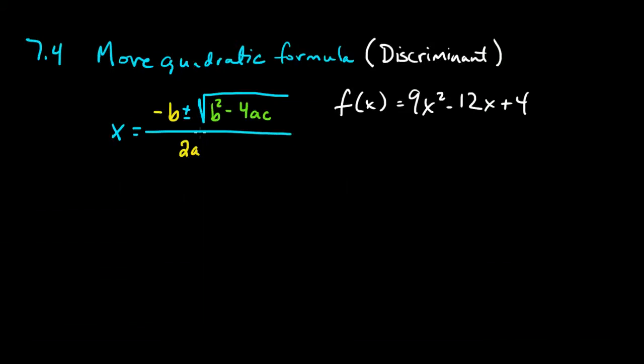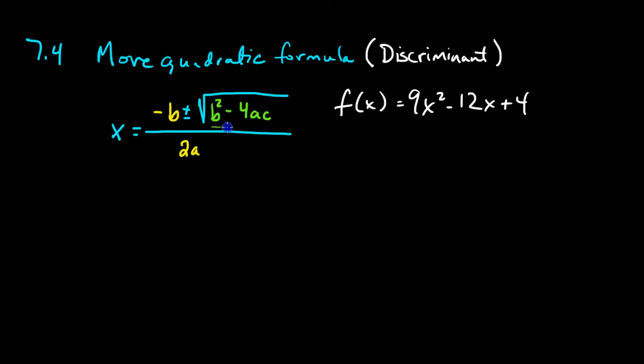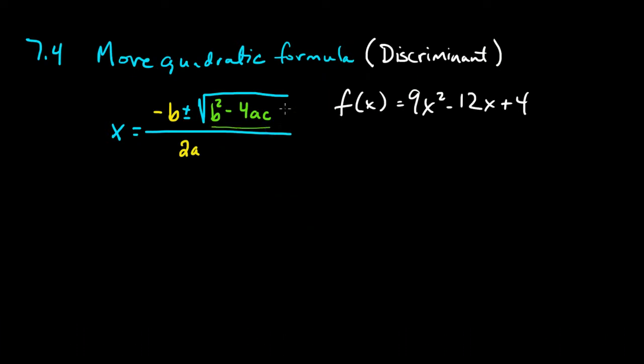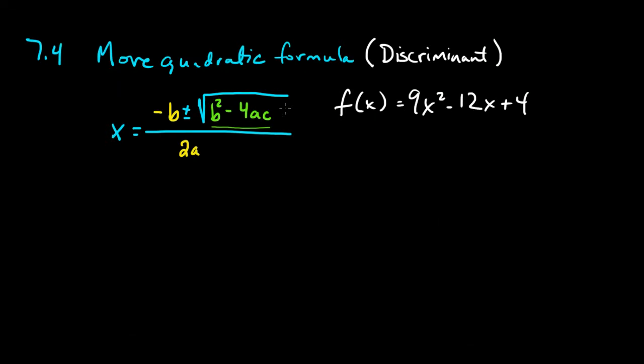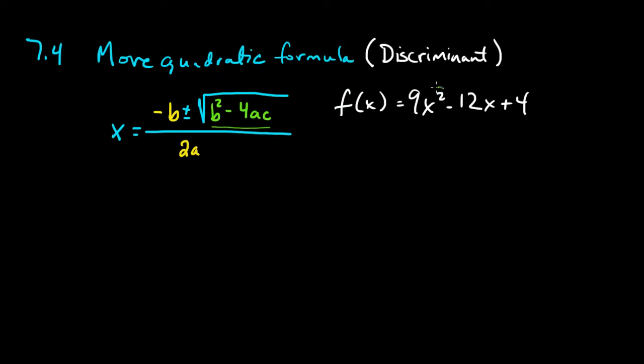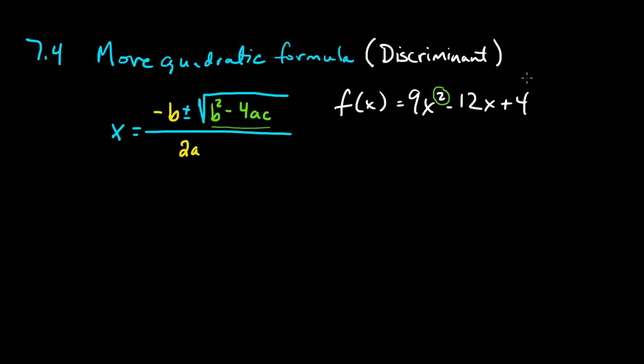We'll know about the nature of the roots based on something called the discriminant, and the discriminant is this part that I have in green here. The discriminant will tell us exactly how many roots we have and whether those roots are rational or irrational. Because a quadratic equation has up to 2 roots, then we can have 0 roots, 1 root, or 2 roots for any equation.